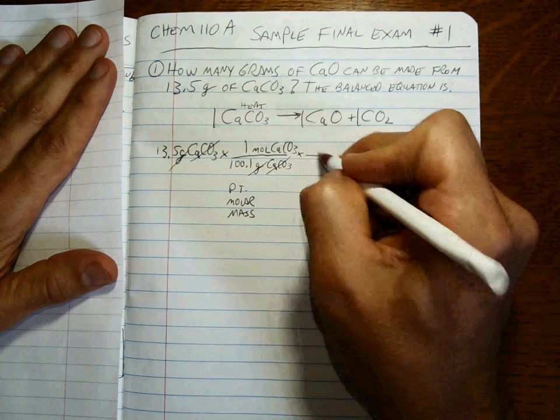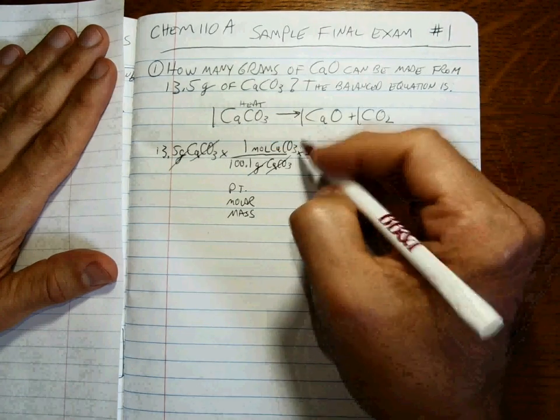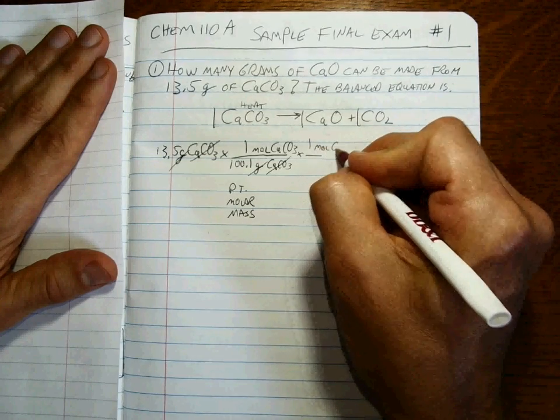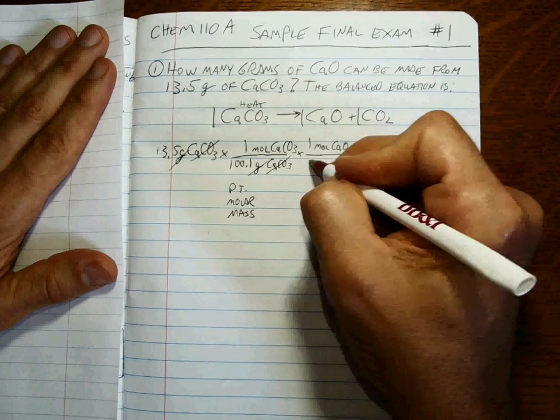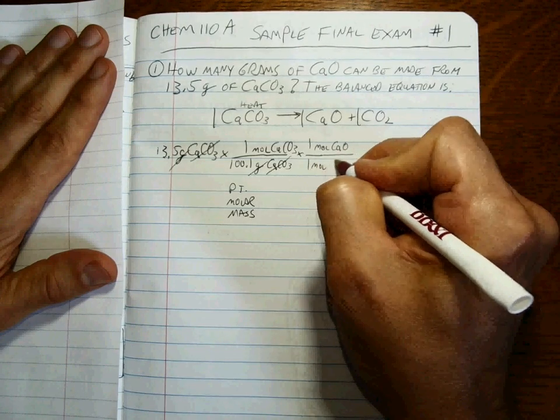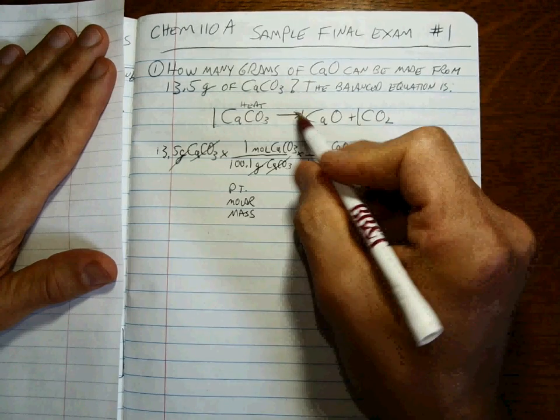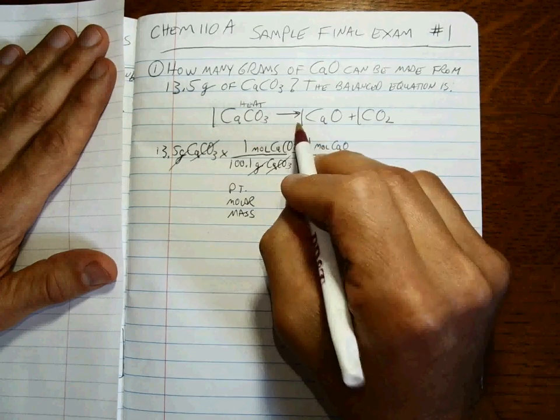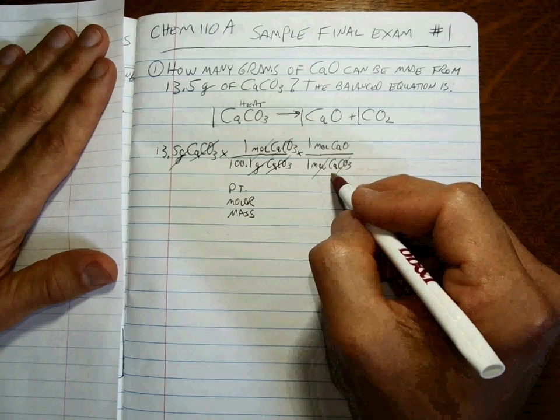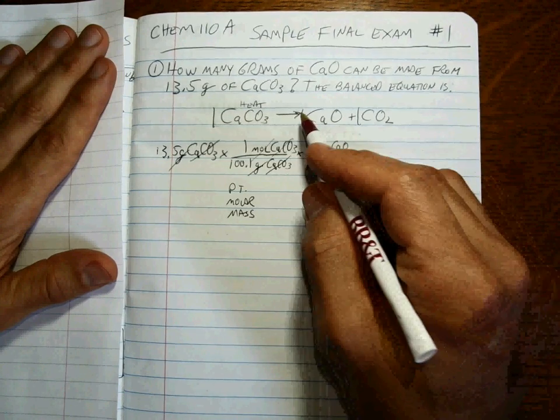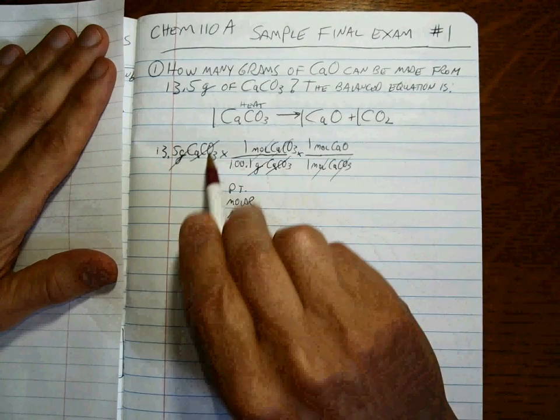Once we're there, we can use the mole to mole ratio of the balanced equation to get from where we started to where we want to end up. No promise your ratio in your final will be one to one, but this one is. That one comes from there, that one comes from there, right?